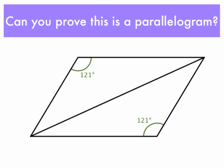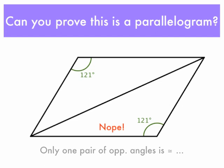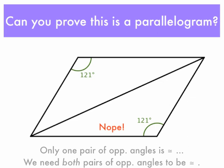How about this figure? We have one pair of opposite angles congruent, but that's not enough to prove that this is a parallelogram. It looks like one and it might be one, but we can't prove that it is, because only one pair of opposite angles is congruent. We need both pairs of opposite angles to be congruent in order to prove it's a parallelogram.